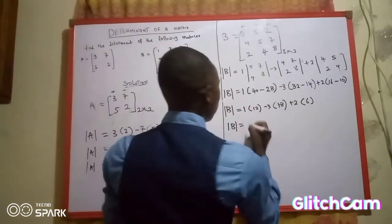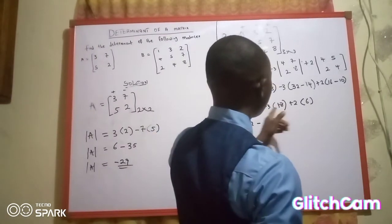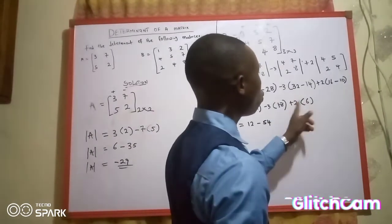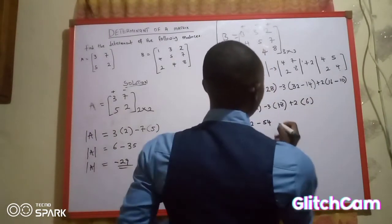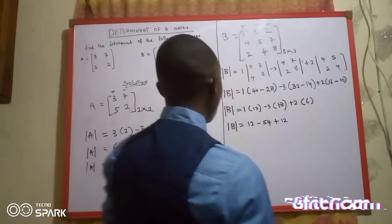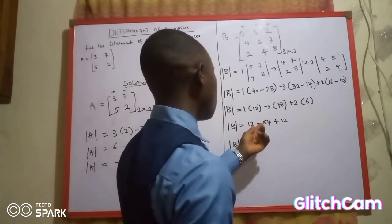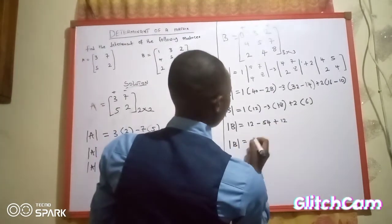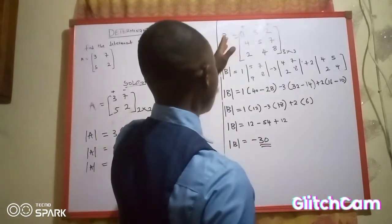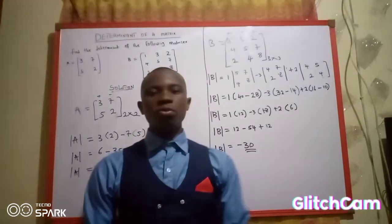So the determinant of B equals: 1 multiplied by 12 gives 12, then minus 3 times 18 gives minus 54, then plus 2 times 6 gives plus 12. This is the determinant of this matrix. Thank you for listening, and please remember to subscribe to my YouTube channel.